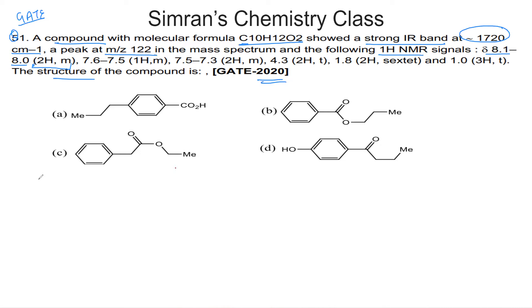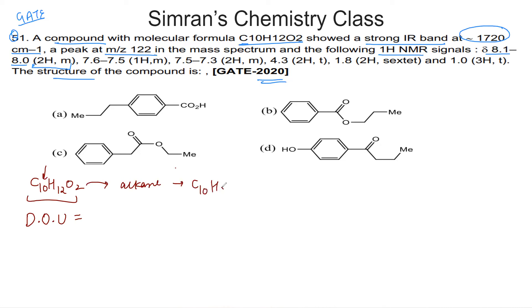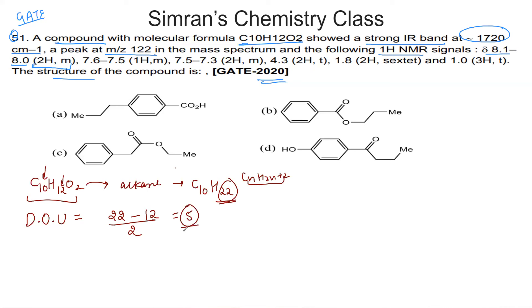First, if we look at the molecular formula C10H12O2, we will calculate the degree of unsaturation. We remove the corresponding alkane: with 10 carbons the corresponding alkane is C10H22, since the general formula is CnH2n+2. Comparing 22 hydrogens (full saturation) to our 12 hydrogens, we get 22 minus 12 = 10, divided by 2, giving us 5 degrees of unsaturation.